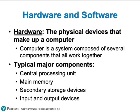Hardware are the physical things that make up a computer. The major components of a computer are the CPU — the central processing unit — main memory, which is RAM, secondary storage devices like hard drives and flash drives, and input and output devices, sometimes called I/O devices, to get data into and out of the computer.